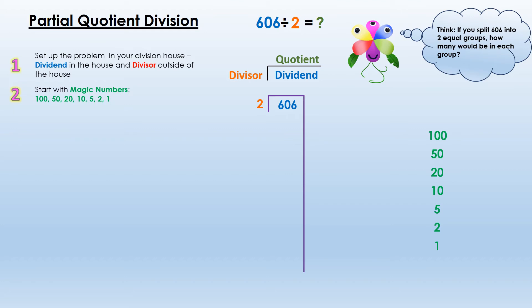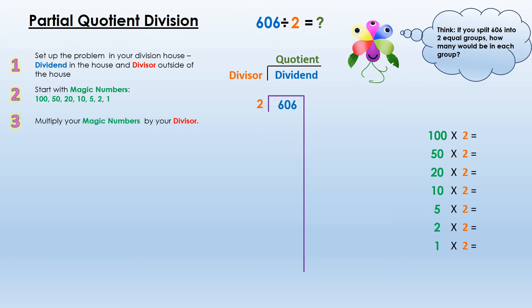Now that my house is set up, I need to start with my magic numbers. I'm going to put my magic numbers to the side — they are 100, 50, 20, 10, 5, 2, and 1. The reason I'm using these magic numbers is because they're really easy to multiply. I'm going to multiply each magic number by my divisor, 2. So I'd give 100 to 2 groups, 50 to 2 groups, 20 to 2 groups, and so on.